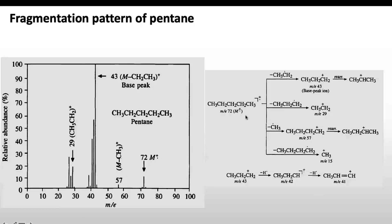So we see peaks for the cation at 29 and 57, and 43 is the base peak. The peaks at 42 and 41 arise from further fragmentation: the cation at 43 loses a proton to give the peak at 42, and that fragment loses another proton to give a peak at 41. These are all the fragmentation patterns occurring in the case of pentane.